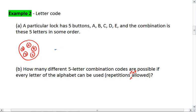You can use the placeholder method. There's a five letter combination. For the first spot, there are five possible letters to choose from: A, B, C, D, and E.